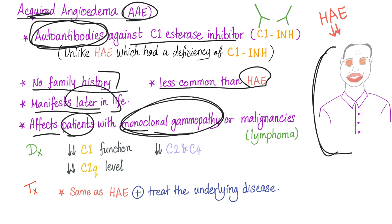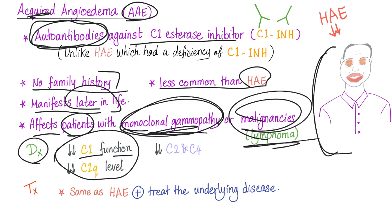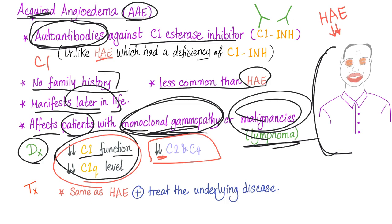Acquired angioedema affects patients with monoclonal gammopathies, myeloproliferative neoplasms, paraproteinemias, and malignancies — especially lymphoma. For diagnosis: C1 level and C1 function are both decreased (unlike hereditary angioedema, where C1 was normal). C2 and C4 are decreased because they are over-consumed by the activated classical complement pathway.